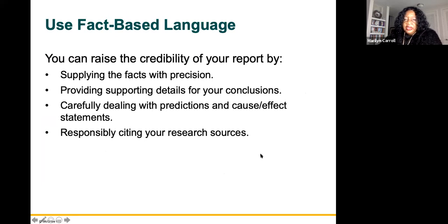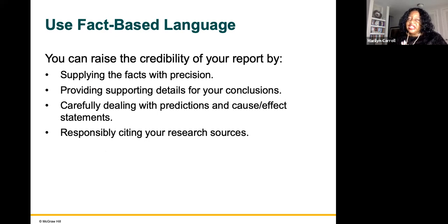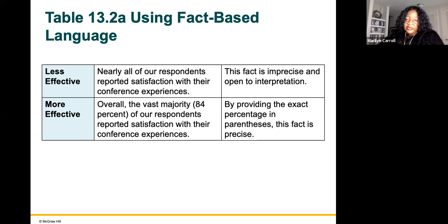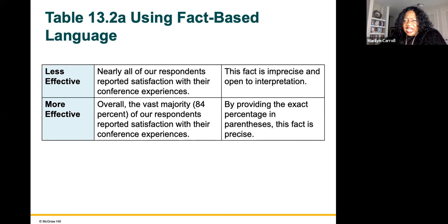Use fact-based language. You can raise the credibility of your report by supplying facts with precision, providing supporting details for your conclusions, carefully dealing with predictions and cause-effect statements, and responsibly citing your research sources. For example, saying 'nearly all of our respondents reported satisfaction' is less effective. More effective: 'The vast majority — 84% — of our respondents reported satisfaction with their conference experience.' You see the difference — by giving the specific number 84%, you are doing much better.